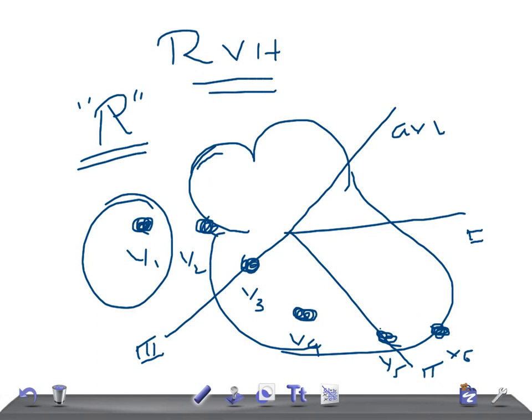We know that the R waves increase in height from V1 to V6. As you proceed from V1, V2, V3, V4, V5, and V6, the R waves keep on increasing in height. That's why the R wave will be very big in V5 and V6 - it has reached the maximum.